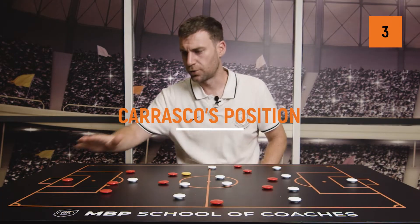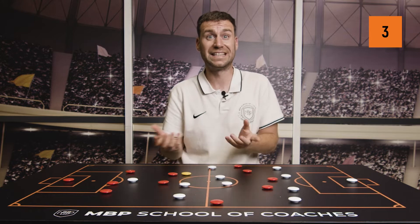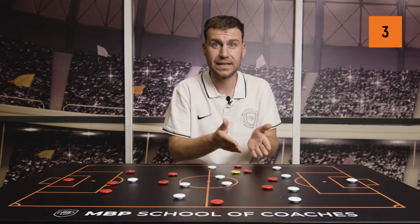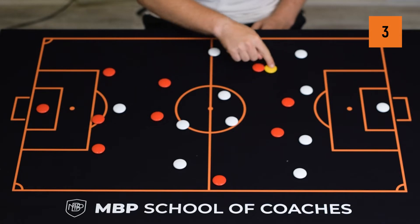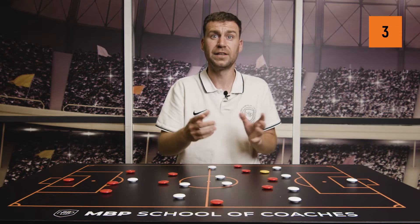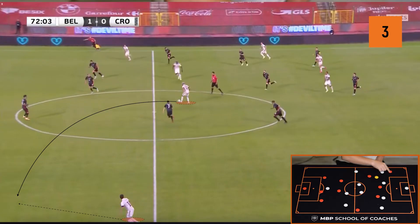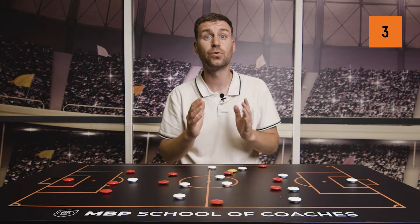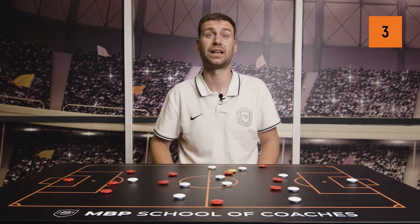With the attacking structure of a 3-4-2-1, Carrasco is tasked to find the left pocket between the fullback, centre-back and midfield line. Receiving there allows him to break the lines of pressure through quick dribbling, trying to find the runs of Lukaku and Mertens and also the overlaps of the left wing-back. However, it should be mentioned that this position is not where Carrasco has played most of his games this season.